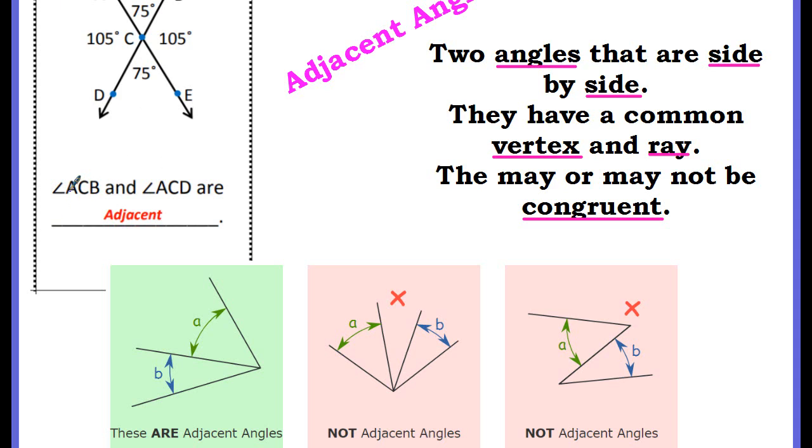It tells us that angle ACB and angle ACD are adjacent. So this is angle ACB and then angle ACD. ACD is right here. So you can tell they both share this ray AC and then the common vertex they have is where C is at. These are adjacent. Basically adjacent angles are those that are side by side.